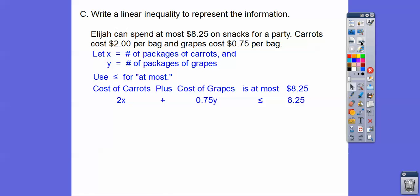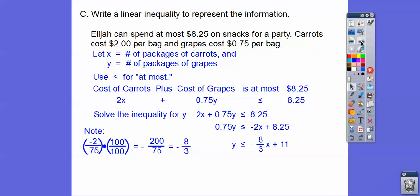So now let's solve for y. So solve the inequality for y because they would like us to. So let's subtract the 2x. There we go. Now we're going to divide by 0.75. And I did that over here.